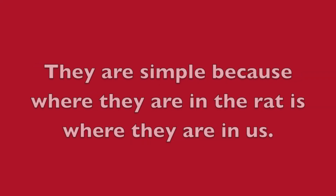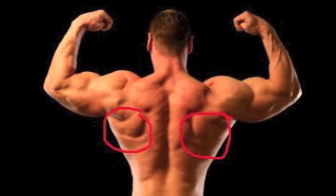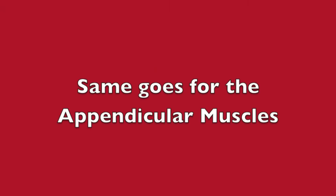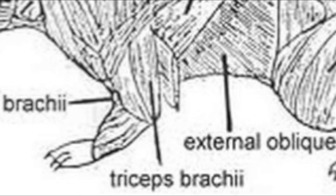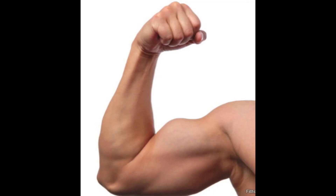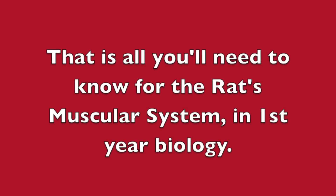The last couple of muscles we need to know are quite simple because where they are in the rat is where they are in us. For example, the latissimus dorsi begins behind the arm and runs to the mid-dorsal line over the ribs — just like a human's lat. Same goes for the appendicular muscles: the bicep brachii flexes the forearm, the tricep brachii extends the forearm — the human bicep, the human tricep — looks very familiar. And that is all you'll need to know for the rat's muscular system in first year biology.